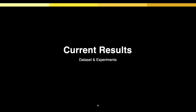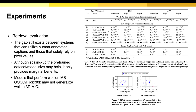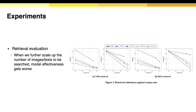Here are some current results based on the sparse judgment. There is still a gap between systems that can access the captions, like the BM25 systems, and those that solely rely on pixel values, such as the CLIP model, BLIP model, or the FLAVA model. Scaling up the pre-trained dataset or the model size could help, but it only brings marginal benefit when compared to caption-based systems. Also, models that perform well on the MSCOCO dataset don't guarantee they can generalize to the ATOMIC dataset. When we scale up the number of images and documents to a more realistic setting, like millions of candidates, model effectiveness degrades rapidly.